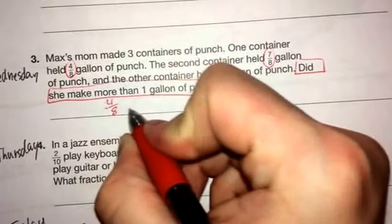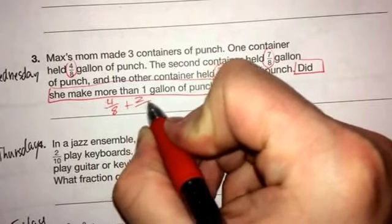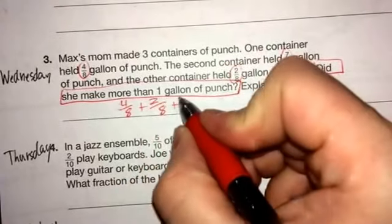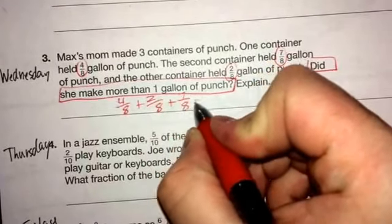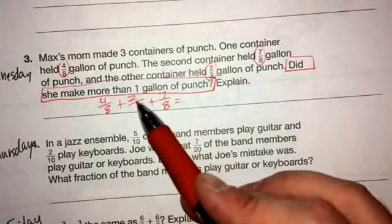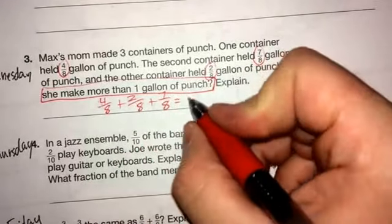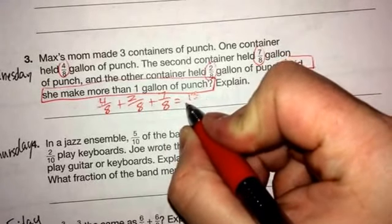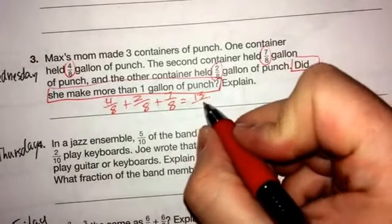So I'm going to go ahead and put 4/8 down, 2/8, and 7/8. And I'm going to add all of these up. And so 4 plus 2 gets me 6. 6 plus 7 is going to get me 13. And then I'm going to bring my 8 across.